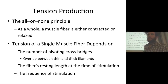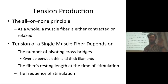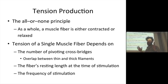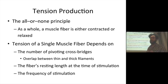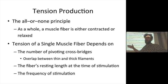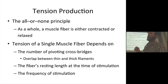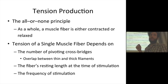When producing tension in a muscle fiber — a single cell — this is the all-or-none principle. A muscle fiber is either contracted or it is relaxed. The absolute tension that a single muscle fiber gives you is a factor of, first of all, the number of pivoting cross-bridges. The way I like to think of this is how much rubber is on the road — like the really wide tires in Formula One. What's the overlap between the thick and thin filaments? The larger the zone of overlap, the more potential for cross-bridge formation you're going to have.